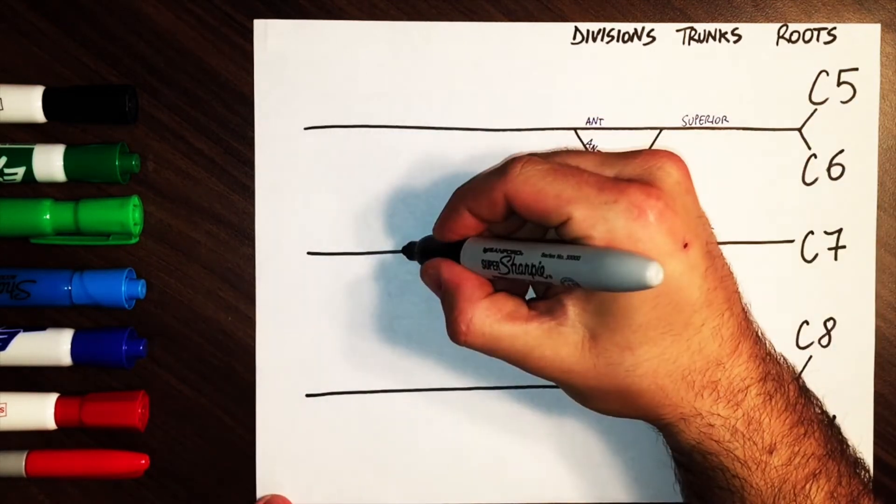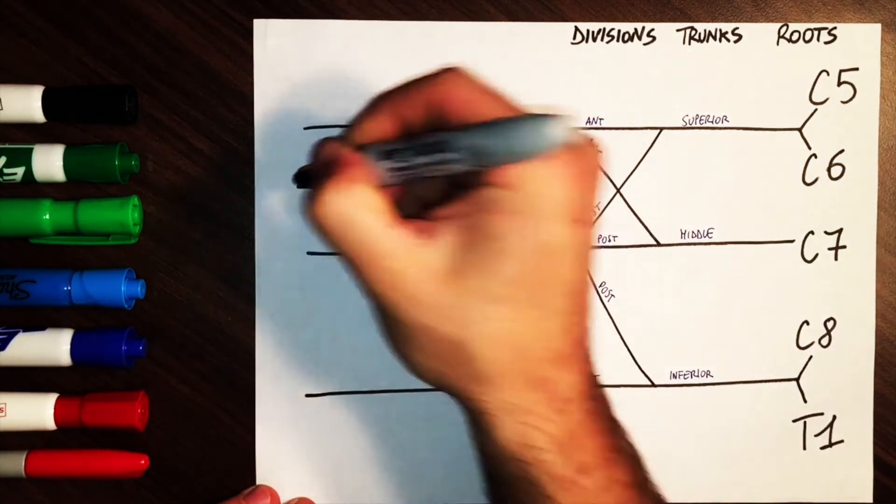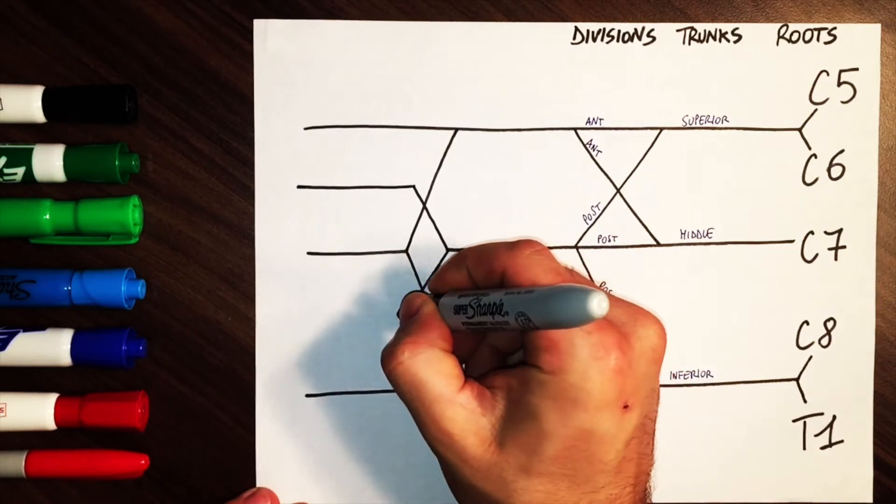Now move distally, complete the M shape which gives origin to the median nerve, and draw the fork from the middle cord, which will form two more branches for a total of five.